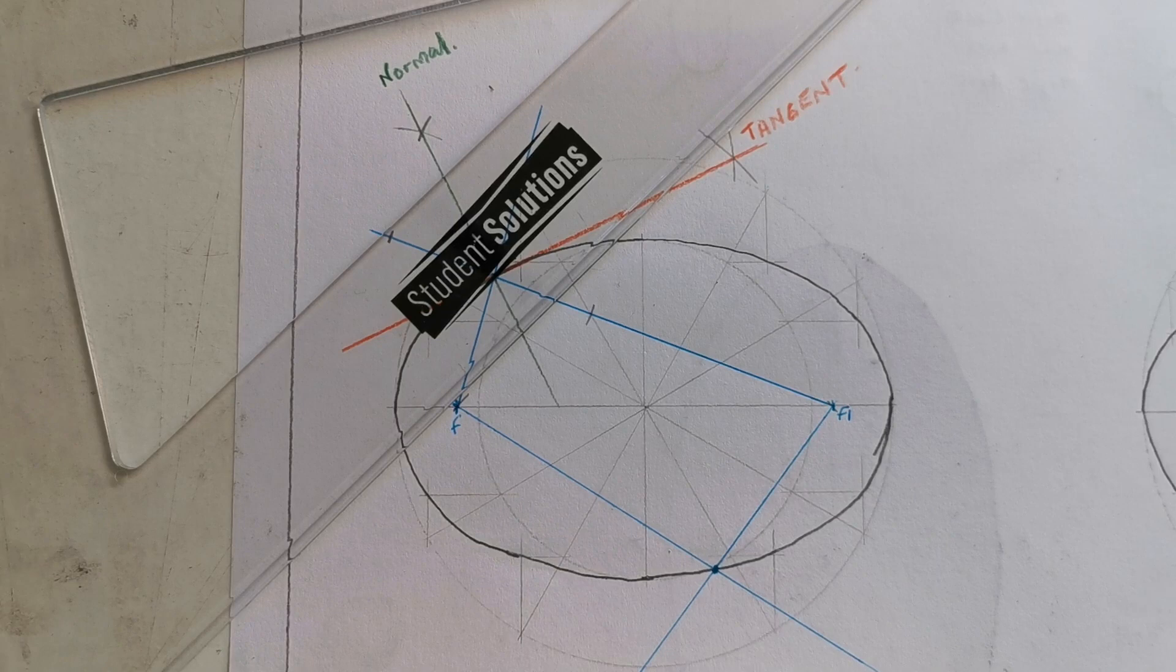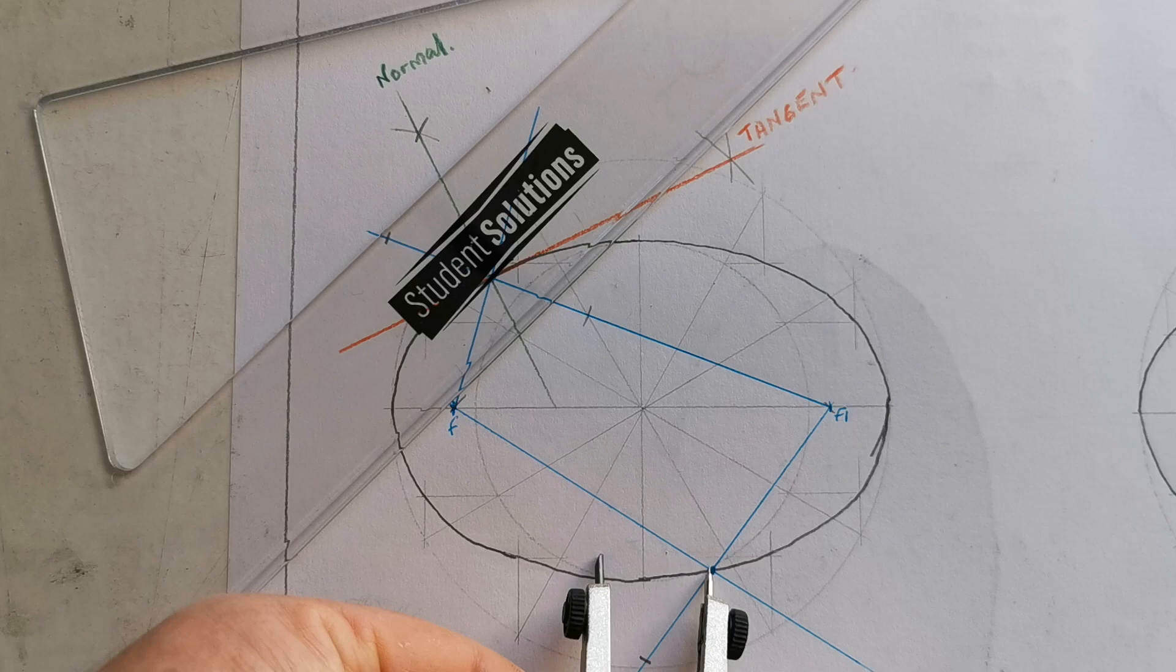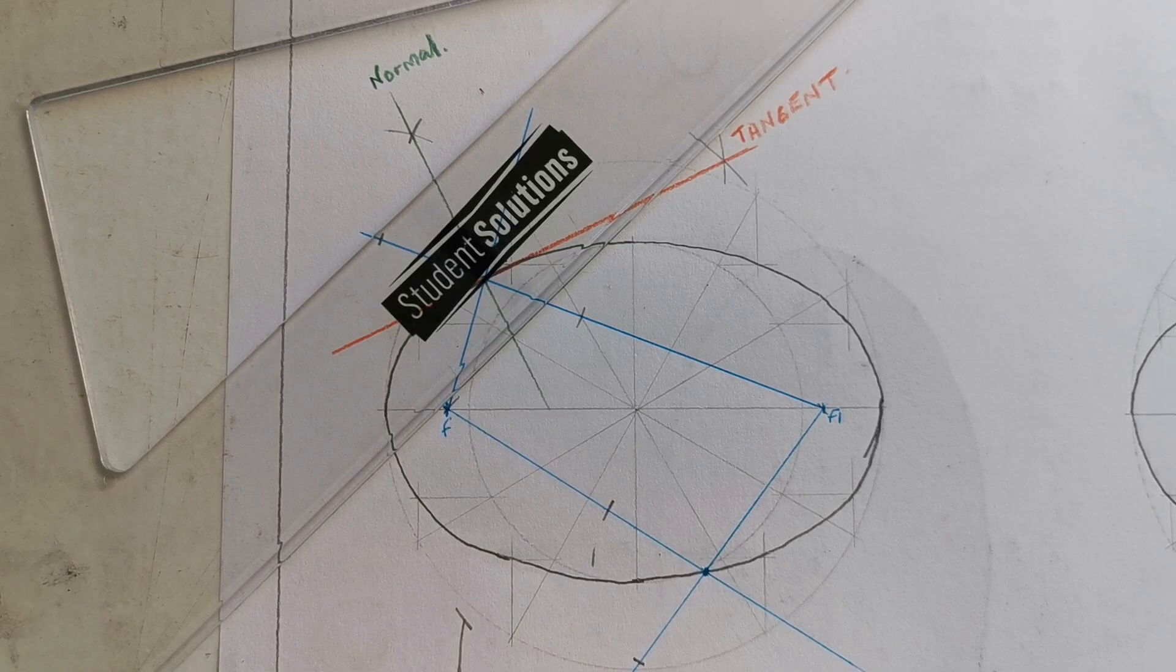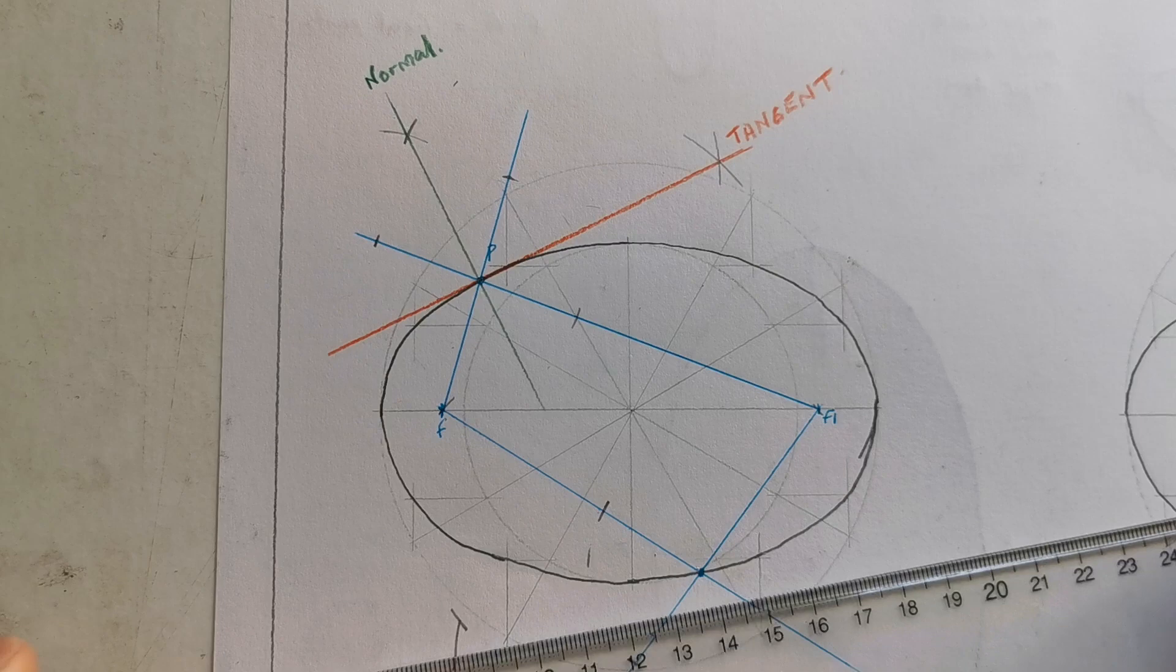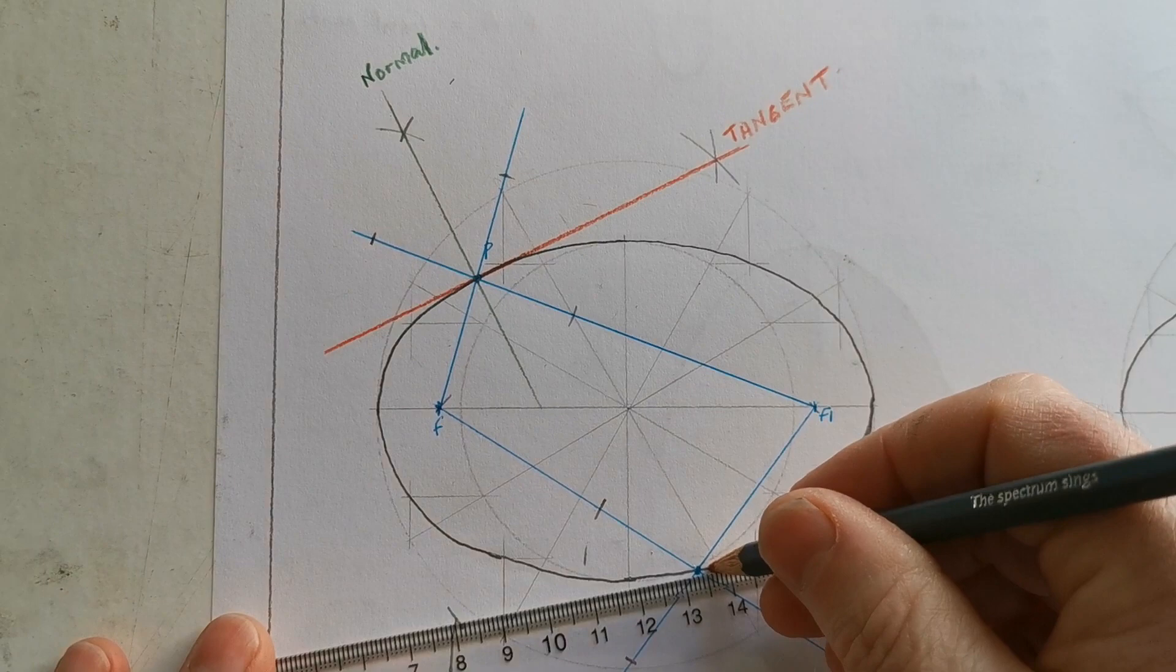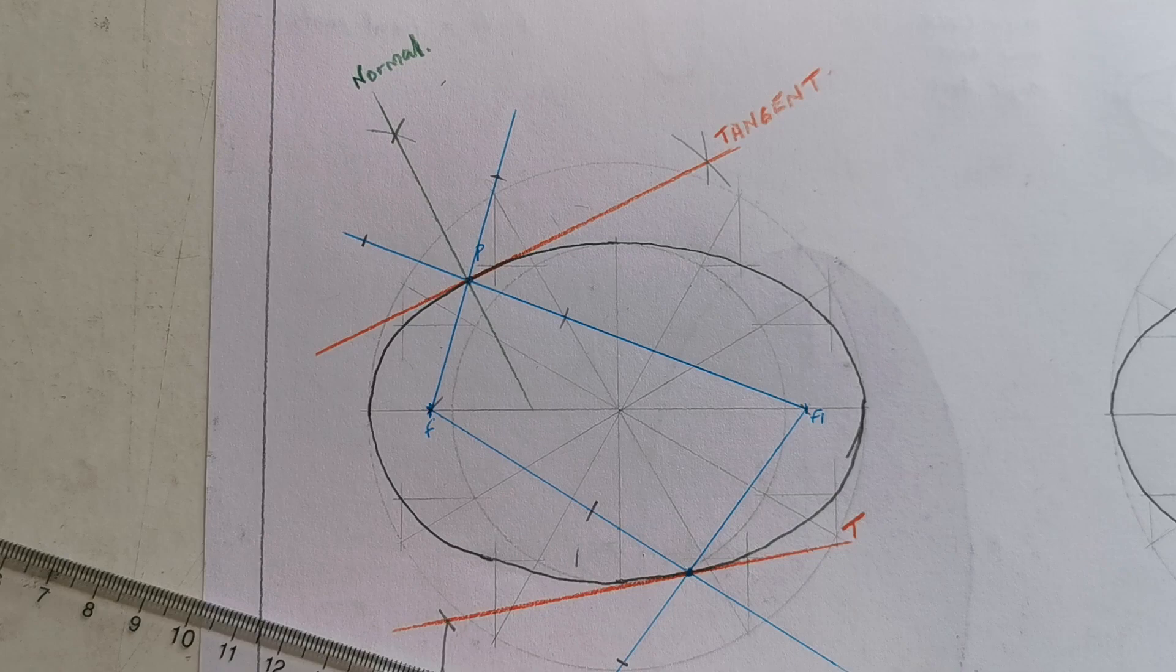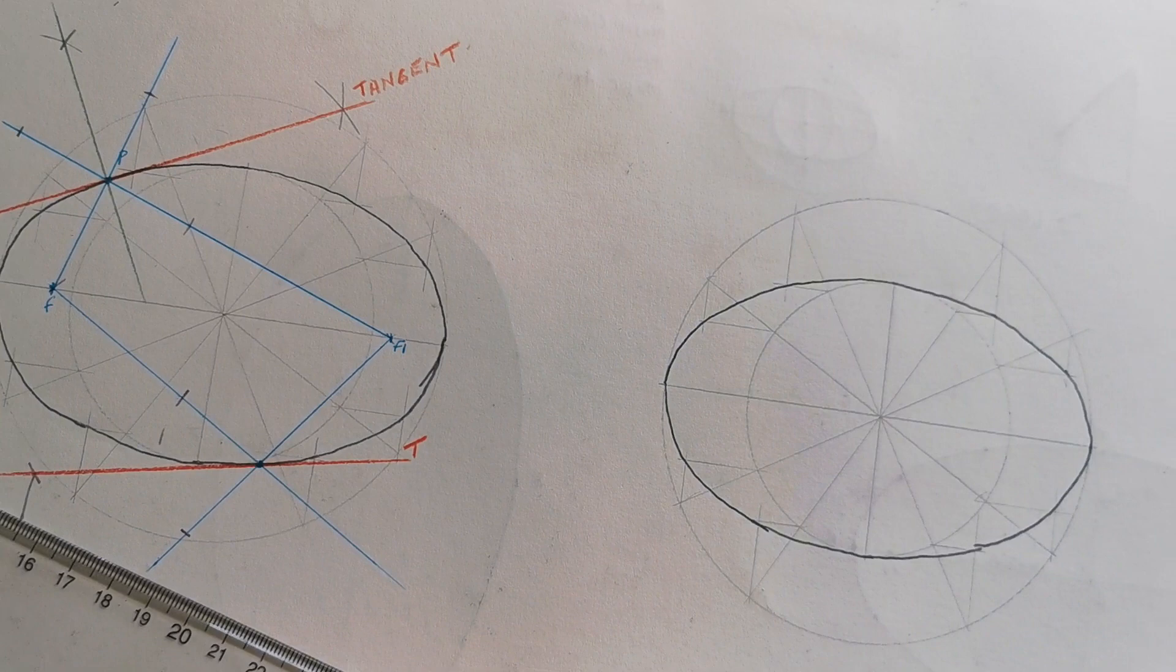Get your compass, bisect this angle, and this here is our tangent. T for tangent.